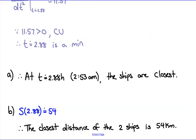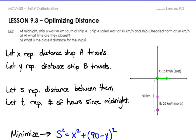Let's start at the beginning. We're going to be optimizing distance, starting at example number six — a continuation of the last couple of videos. At midnight, that is our starting point — time zero in military time. Ship B was 90 kilometers south of ship A. Here's ship A, and we've got our 90 kilometers.